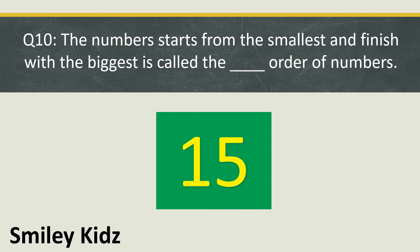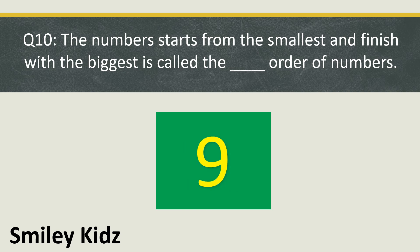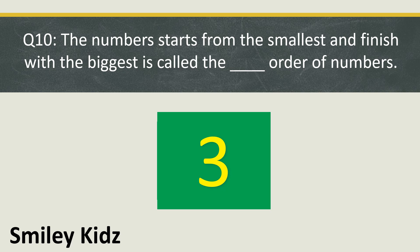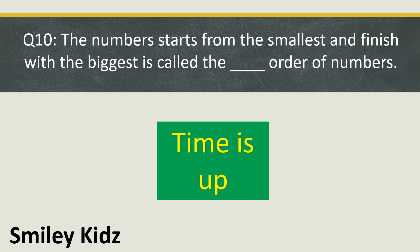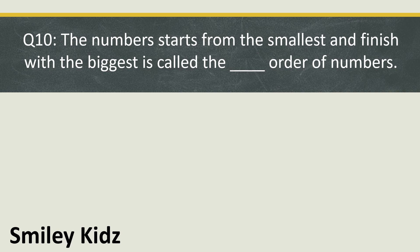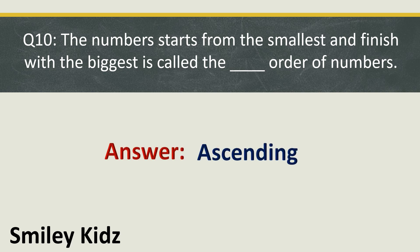Question number 10: The number order that starts from the smallest and finishes with the biggest is called the blank order of numbers. Your time starts now. Your time is up. The right answer is ascending. The order that starts from the smallest and finishes with the biggest is called the ascending order of numbers.